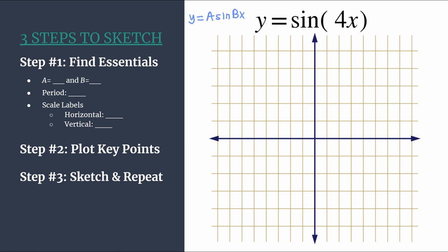Find the essentials, and we'll first identify A and B. So A is the coefficient in front of sine. There's nothing there, we understand that it's a one, and that means our amplitude is going to be one. That's the distance from midline to max or midline to min. And then we see B is the coefficient of x, so B is four here, and B tells us several things.